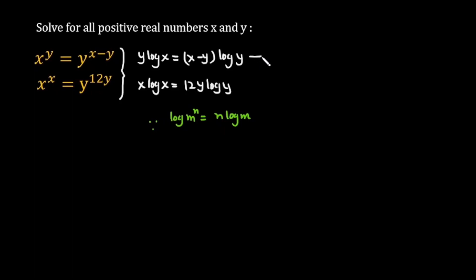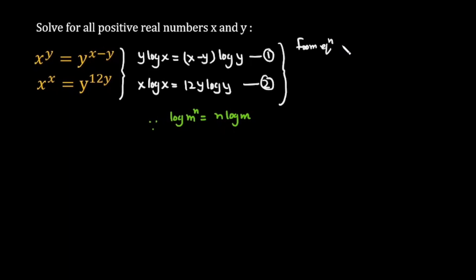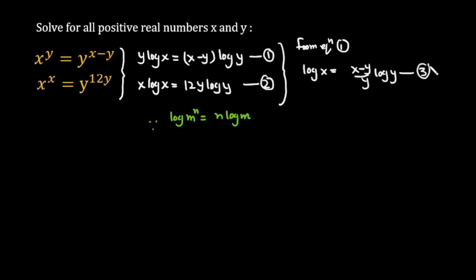Mark this as equation number 1 and the second as equation number 2. From equation 1, we can isolate log x: log x is equal to x minus y over y, times log y. Mark this as equation number 3.